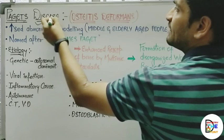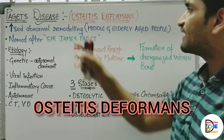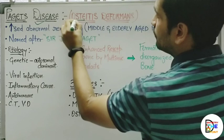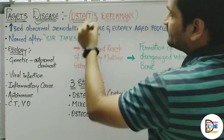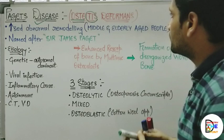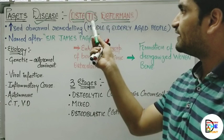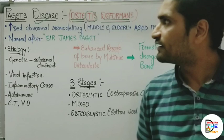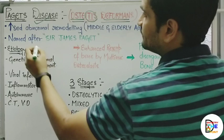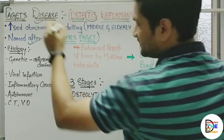Starting with Paget's disease. Paget's disease is also known as osteitis deformans. Let's split this term: 'ostei-' relates to bone, '-itis' stands for inflammation, and 'deformans' means something which is causing deformation — so it is an inflammatory condition causing deformation in the bone. It was named after Sir James Paget, who was the first to describe this condition.